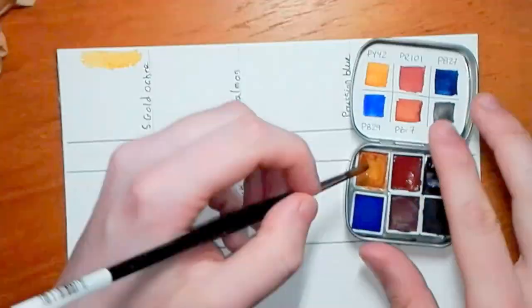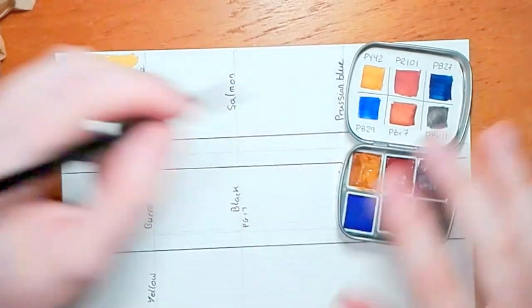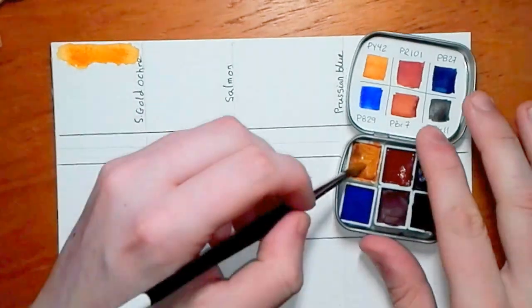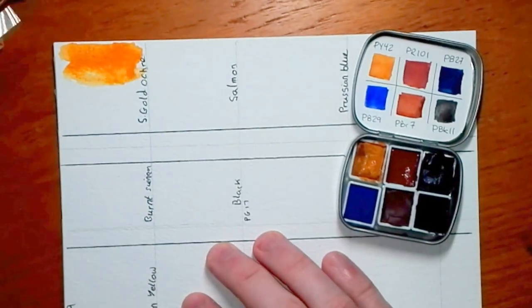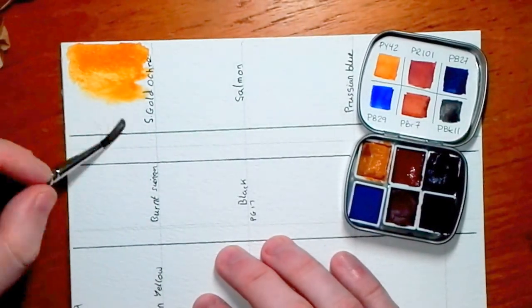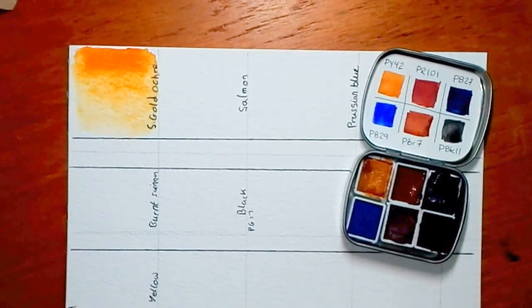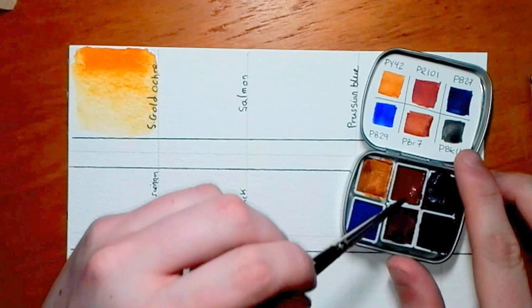So the first color I'm swatching here is Spanish Gold Ochre, PY42. It's one of the ones she made first time round. This one was a little bit difficult to work with. I think there was a little bit of Arabic gum that comes to the top of the paint. However once I got past that it reacted really well.